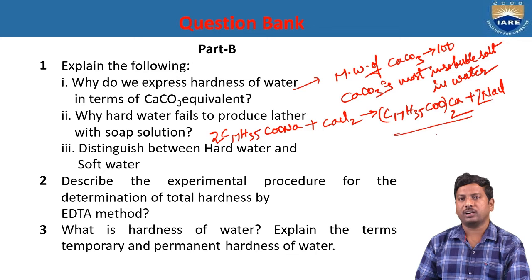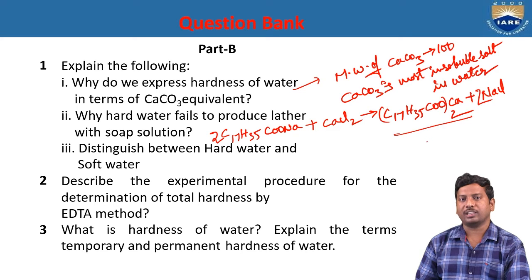Hard water is the sample of water which cannot give lather with soap. Soft water is the sample of water which can give lather with soap. Describe the experimental procedure for determination of total hardness by EDTA method. With the EDTA method, we can determine total hardness, permanent hardness, and temporary hardness.